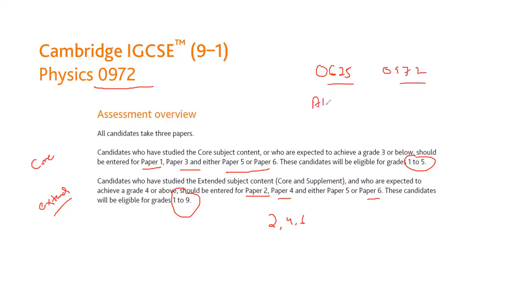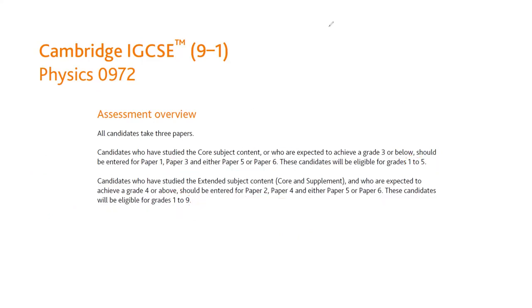The only difference is the grading. For code 0625 you get results in alphabetical order, and for 0972 you get results in numerals. You should select the extended one because with extended you can score high grades — if you select core the maximum you can score is 5, but with extended the maximum is 9.